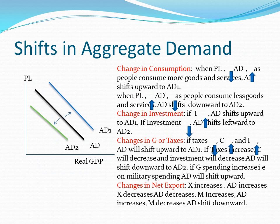Now moving to the next slide, which is shift in aggregate demand. In a shift in aggregate demand, there are four situations where the aggregate demand curve shifts: changes in consumption, changes in investment, changes in government spending or taxes, and changes in net exports.